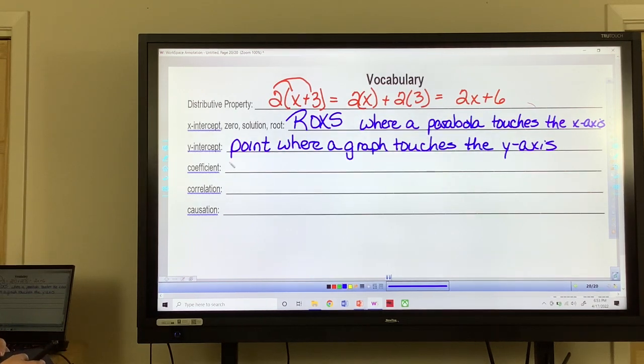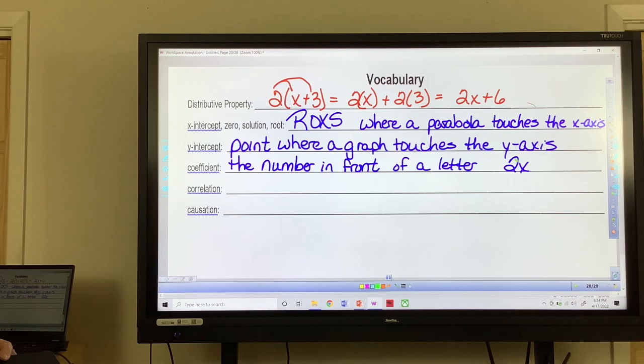Coefficient, the number in front of a letter. So like 2x, our coefficient is the 2.